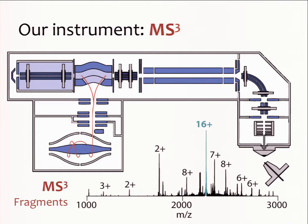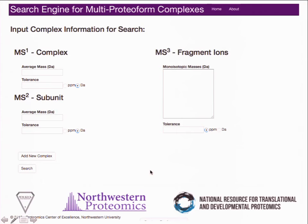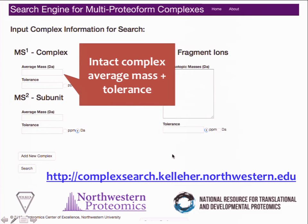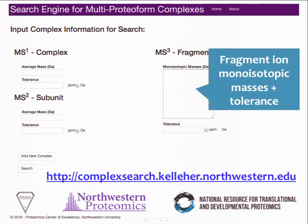In the final step of our native mass spectrometry approach, we have the discovery phase. We use a combination of tools including ProSight PC 4.0, as well as the search engine for multiproteiform complexes — the latter of which I'll be primarily speaking on for the duration of this talk. Our search engine for multiproteiform complexes is a web-based tool found at complexsearch.kelleher.northwestern.edu. It requires just a handful of inputs: the intact complex average mass from the MS1, the subunit average mass from the MS2, and the fragment ion monoisotopic masses from our MS3 experiment.